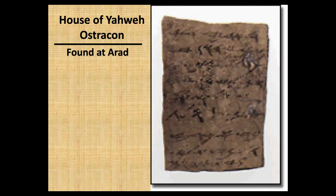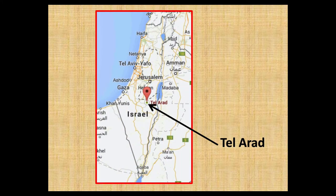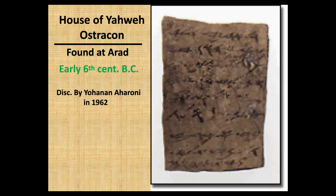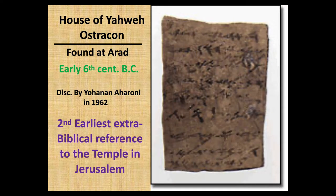From the 6th century BC, we have what's called the House of God, or House of Yahweh, Ostracon. An ostracon is pottery with writing on it. It was found at Arad in 1962, and it's the earliest extra-biblical reference to the temple in Jerusalem.